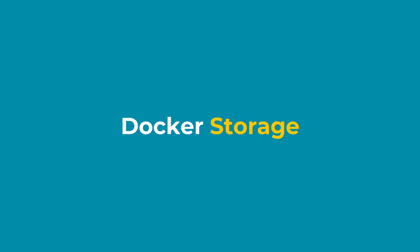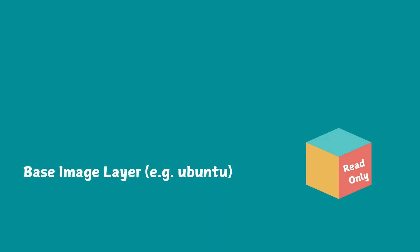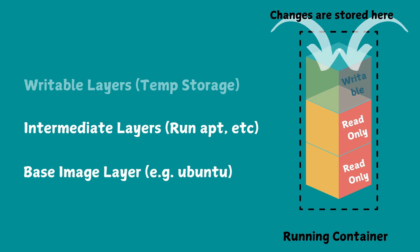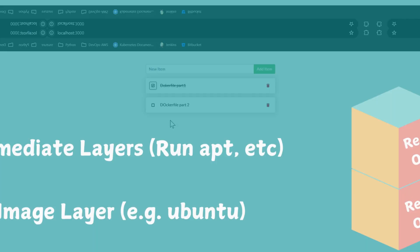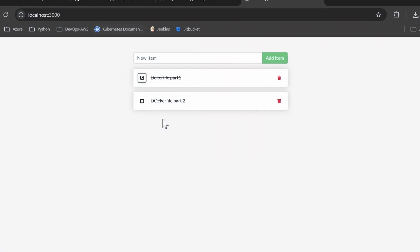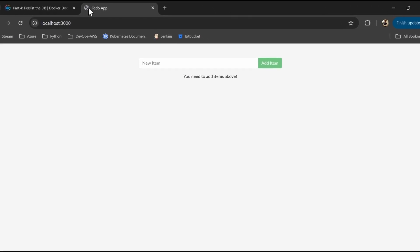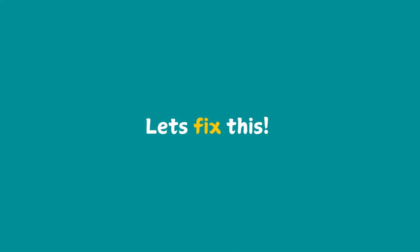First let's understand Docker storage at a high level. When you create a container, Docker uses a union file system to manage the layers. Each layer gets its own writable layer, but this layer is ephemeral - it's temporary. Meaning once the container is deleted, the data inside this layer is lost. That is the reason when we created our to-do application and entered to-dos, they were there, but once we recreated or deleted our container, those were gone. So let's try to fix this problem today.